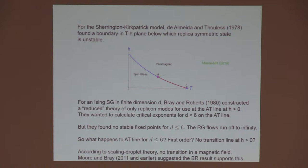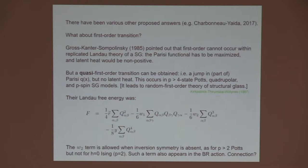There have been various other proposed answers to these questions. Let's come back and think about this first-order question. Gross, Kanter, and Sompolinsky pointed out that a first-order transition actually cannot occur within the replicated Landau theory of a spin-glass. The Parisi functional, or the free energy functional, has to be maximized, not minimized, with respect to the function Q of X. The consequence is the latent heat would be non-positive. But that's forbidden by ordinary convexity properties of free energy.